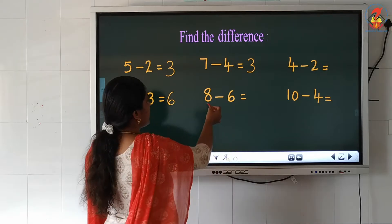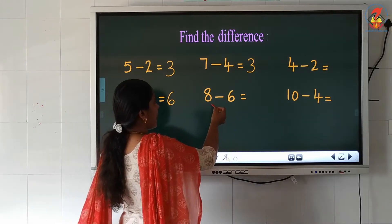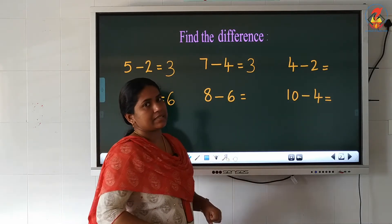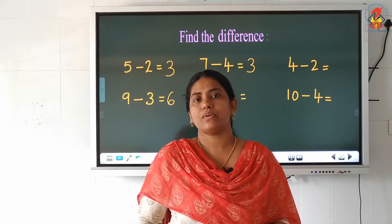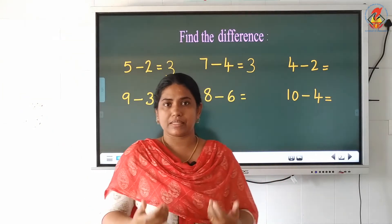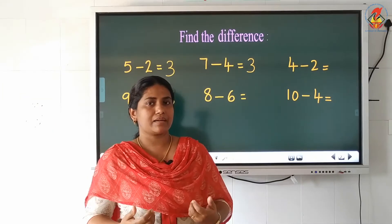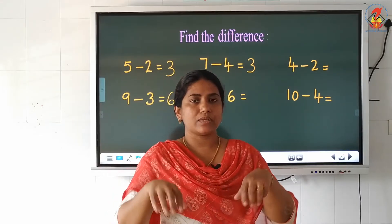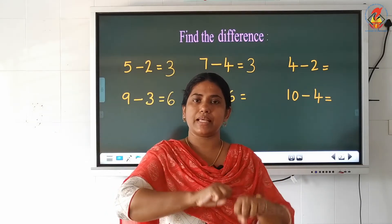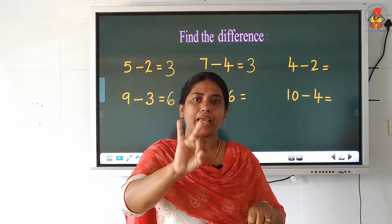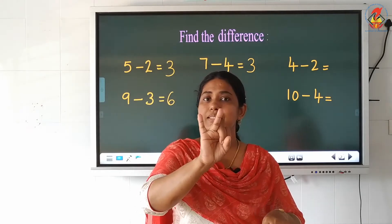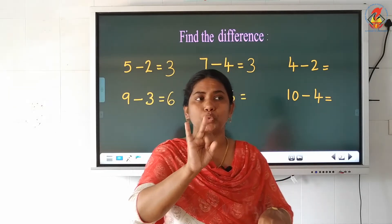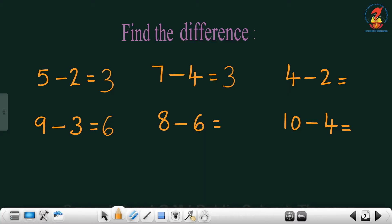Now look at the next question: 8 minus 6. Which is the small number? 6. So after 6 we count. How many fingers did I raise? 2. So 2 is our answer.